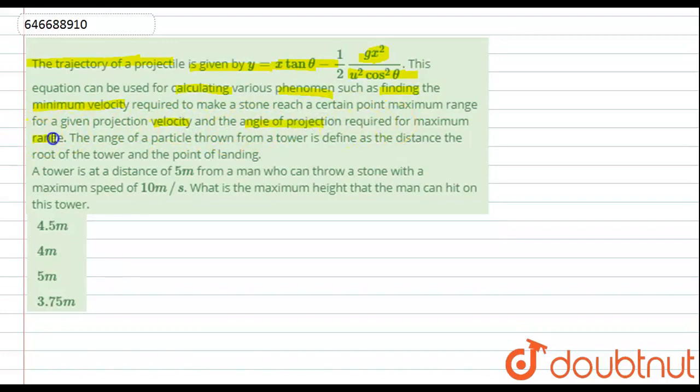Okay, the range of the particle thrown from a tower is defined as the distance from the root of the tower and the point of landing. Let's see the question. A tower is at a distance of 5 meters from a man who can throw a stone with a maximum speed of 10 meters per second. What is the maximum height that the man can hit on this tower? Let's see the solution.